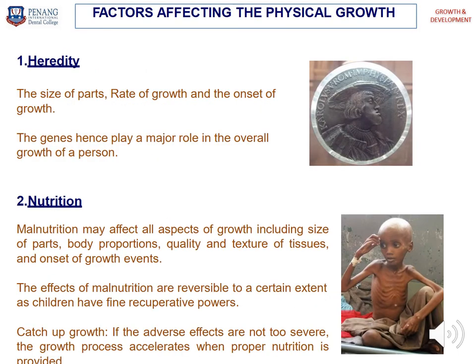Now we look at factors affecting physical growth. First is hereditary. Hereditary may affect the size of parts, rate of growth, and the onset of growth. Genetics plays a major role in the overall growth of a person. For example, if a patient has a Class III occlusion, we will look at the parents, who may also have a Class III occlusion due to genetics. This photo shows a Spanish dynasty with a Class III occlusion — they had a prognathic jaw called the Habsburg jaw, named after the Habsburg dynasty.